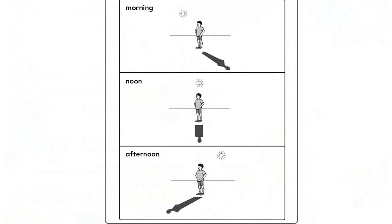The lower in the sky the sun is, the longer the shadow. So the morning and afternoon shadows should be longer than the noon shadow.